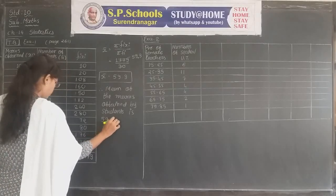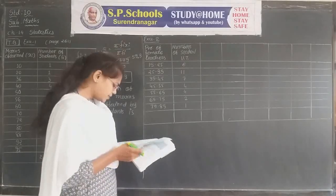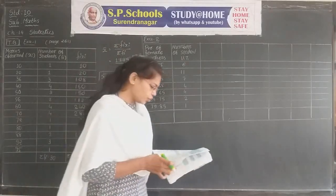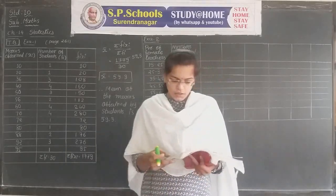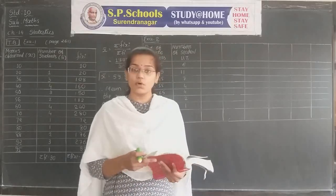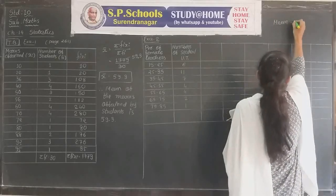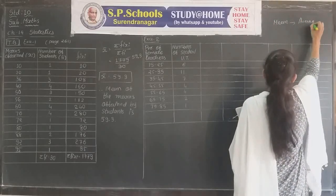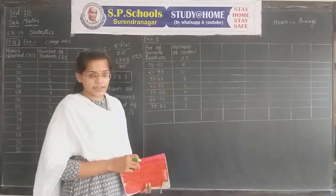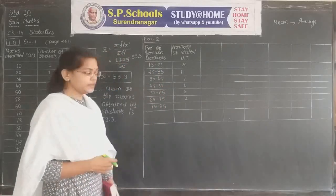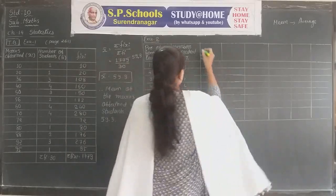Now we go through example number 2. See your textbook page number 267. The mean is also called the average - if the question asks to find the average of given data, it also means the mean of the given data. Example number 2 is on page number 267.